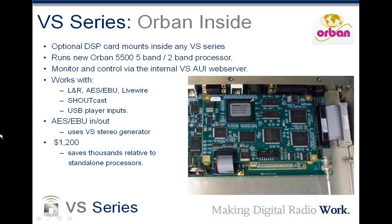Because it's just a simple board, we are able to produce and sell these Orban inside cards installed in a VS transmitter for $1,200 — a fraction of the price you'd pay for a processor this powerful. The key reason Nautel decided to do something completely different is that when you have so many different types of audio inputs, there's only one place to do the audio processing, and that's inside the transmitter. That's why the Orban inside has to be inside.